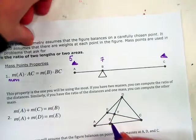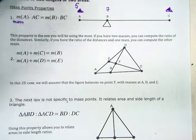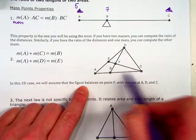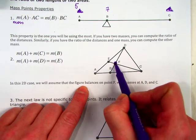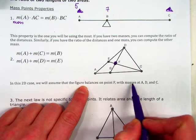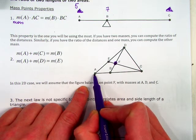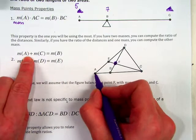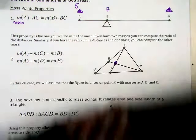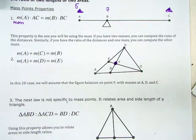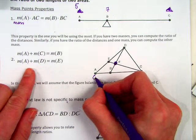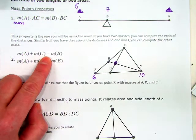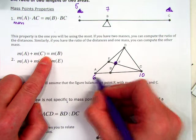In this 2D case, we're going to assume that this triangle is balancing at point F with masses at point A, D, and C. If you know, let's say that this is - let me find a specific one. Let's say the mass at this point is 6, and at this point it's 10. What's the mass at B? You simply add the two.